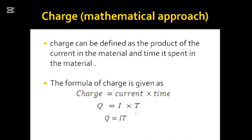Now let's look at the mathematical approach to charge. Mathematically, charge is defined as the product of the current in the material and the time the current spends in the material. So we can say charge is the product of current and time. Bringing it down to a formula: charge Q equals current I times time t — so Q = It. That is the formula for charge.